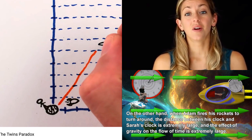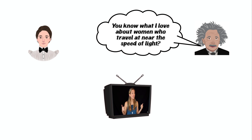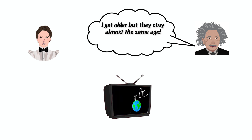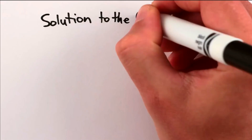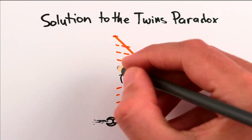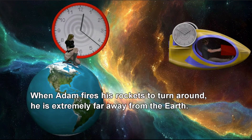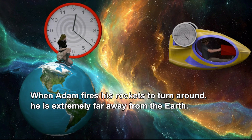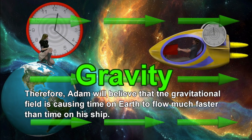Now we're going to look at three different videos. I'm going to skip straight to snippets where they identify their so-called solution to the twin paradox. The first claims: 'Because you changed velocity, your notion of simultaneous times rotates, so your accounting of how time passes in parts of the universe far away from you will have gaps in it.' The second says: 'When your twin turns around, she has to accelerate, which means she's no longer in an inertial reference frame, and so special relativity no longer applies to her.' The third invokes general relativity: 'When Adam fires his rockets to turn around, he is extremely far away from the Earth — therefore Adam will believe that the gravitational field is causing time on Earth to flow much faster than time on his ship.'